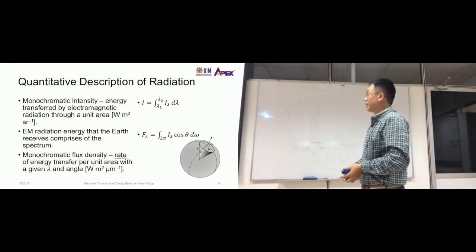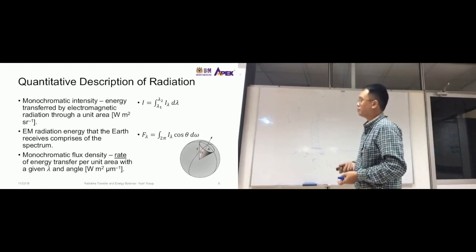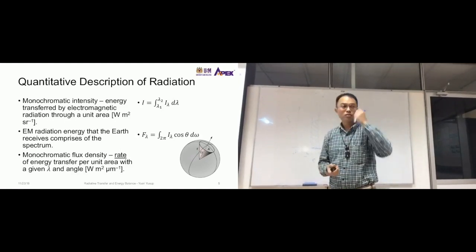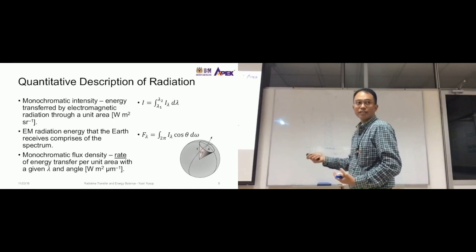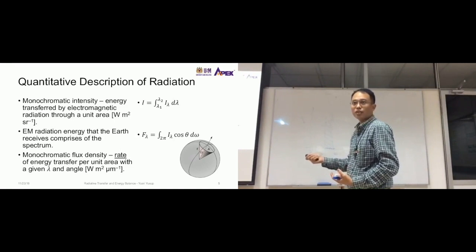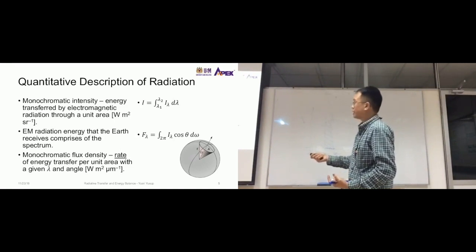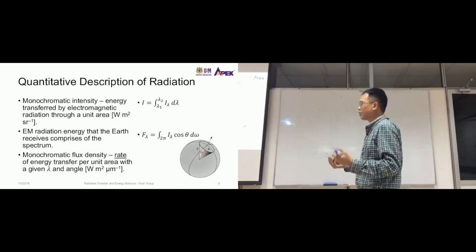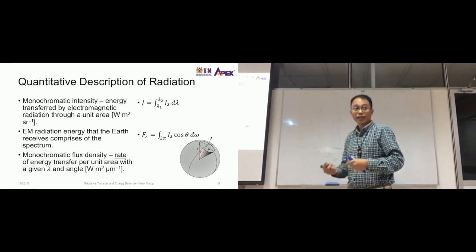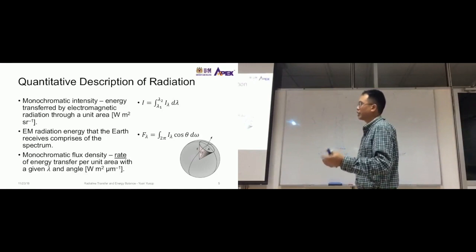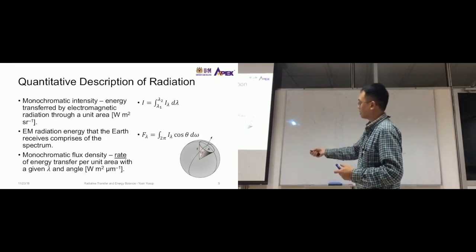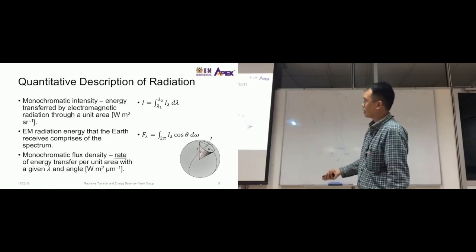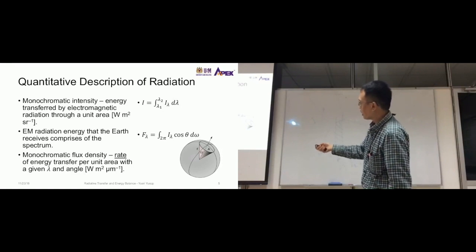The unit is watts per meter squared per steradian. Steradian may be a new unit for you — it's not entirely new, but it's another unit for angle. You've heard of degrees and radians; steradian is a solid angle unit. I'll explain that using a picture that shows the steradian when I discuss this equation.